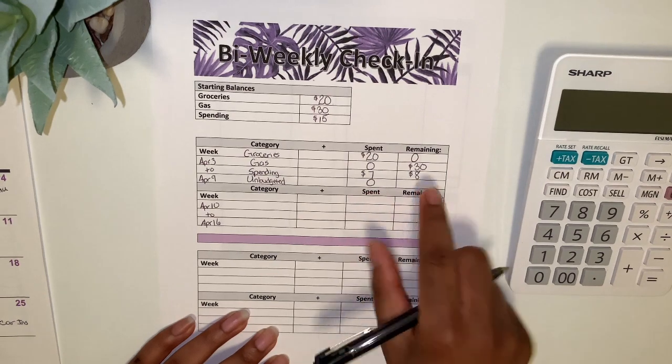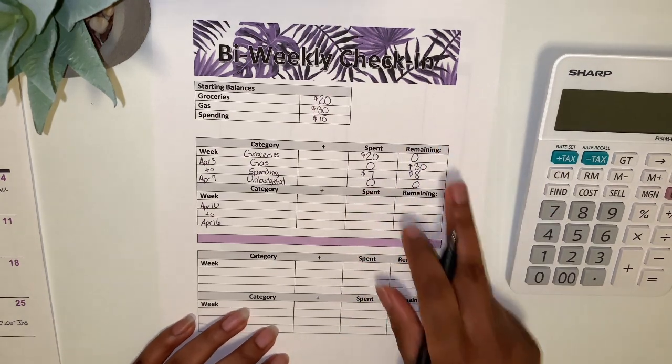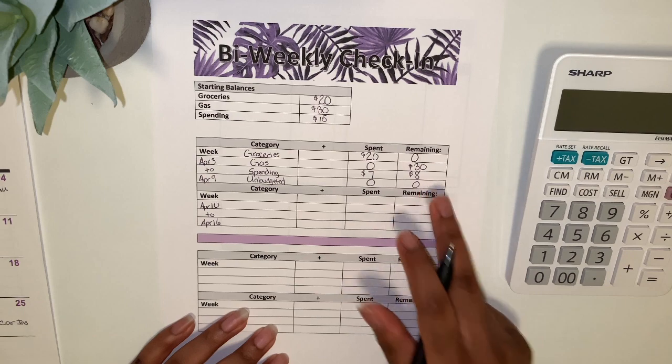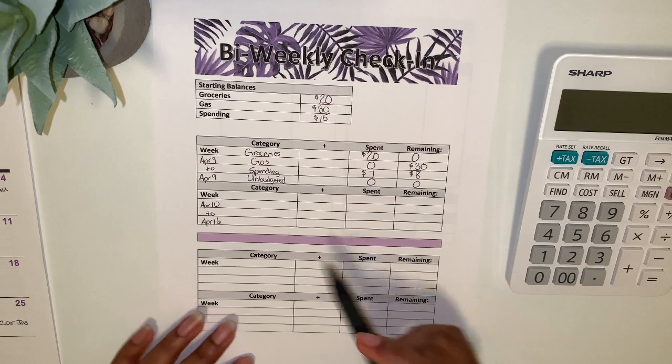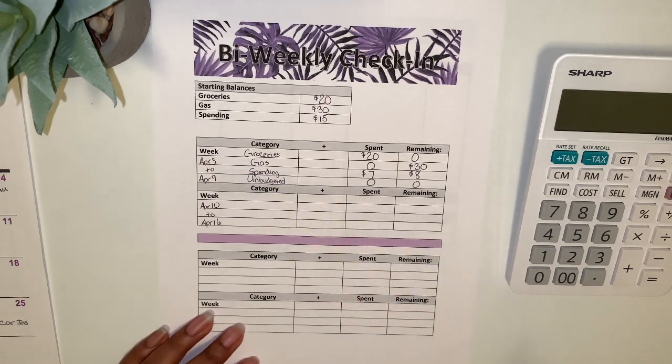Spending, I spent $7 and I had $15, so that leaves me with $8. And then nothing was unbudgeted, so that's still nothing. And then this is how I looked when I did my cash envelope stuffing. So that was for April 3rd to April 9th.